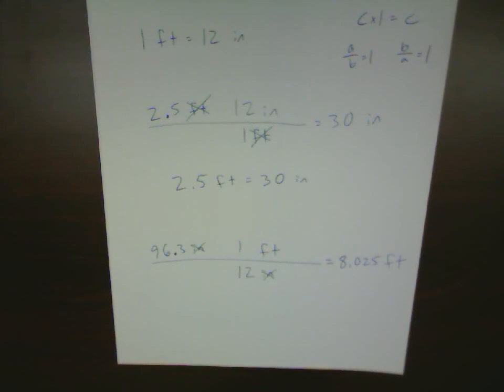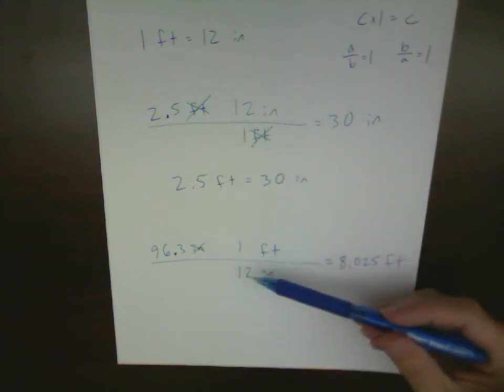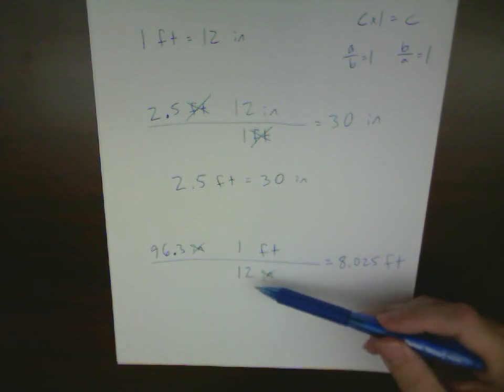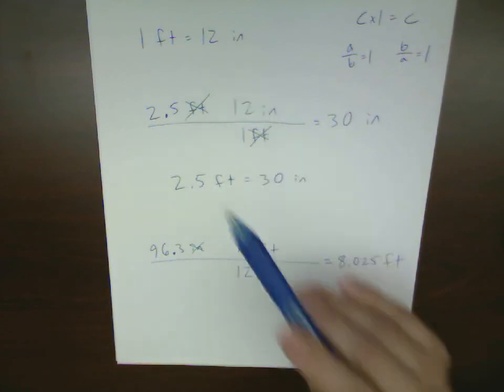Now, most of the time, you don't actually have to do the divide by 1 or the multiply by 1 part. We can just do 96.3 divided by 12. Every so often, we've got some conversion factors where one of them isn't 1. In that case, you want to make sure that you take into account both of those numbers.